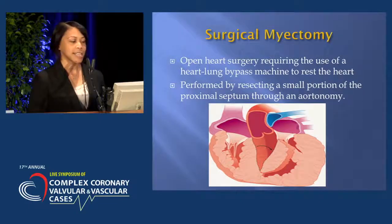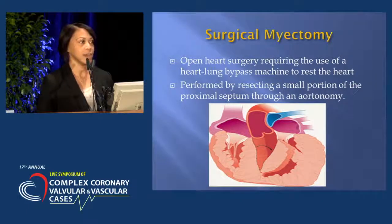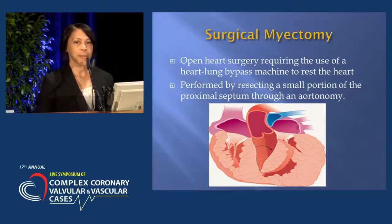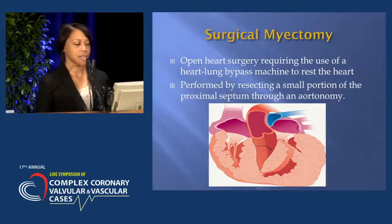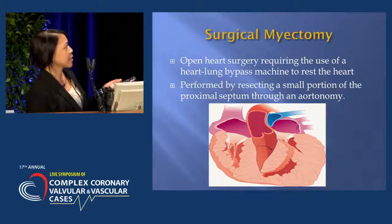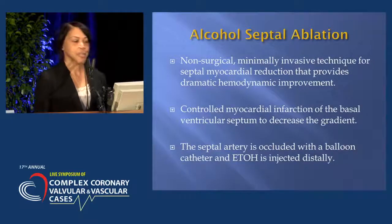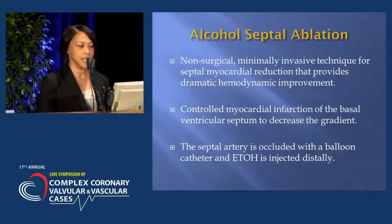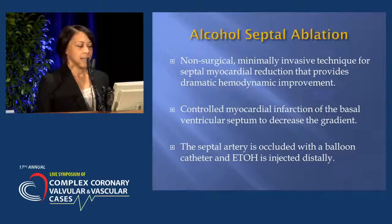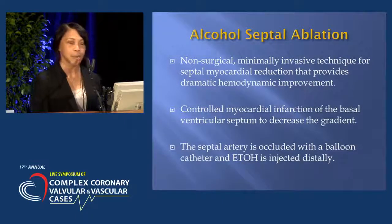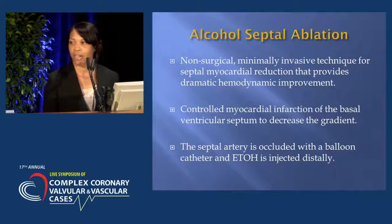With surgical septal myectomy, it's open-heart surgery requiring the use of a cardiopulmonary bypass lung machine to rest the heart, allowing the surgeon to resect a small portion of the septum through the aorta. In alcohol septal ablation, it's a non-surgical, minimally invasive technique for septal myocardial reduction that provides dramatic hemodynamic improvement. There is a controlled myocardial infarction of the basal ventricular septum to decrease the gradient — the septal artery is occluded with a balloon catheter and alcohol is injected distally.